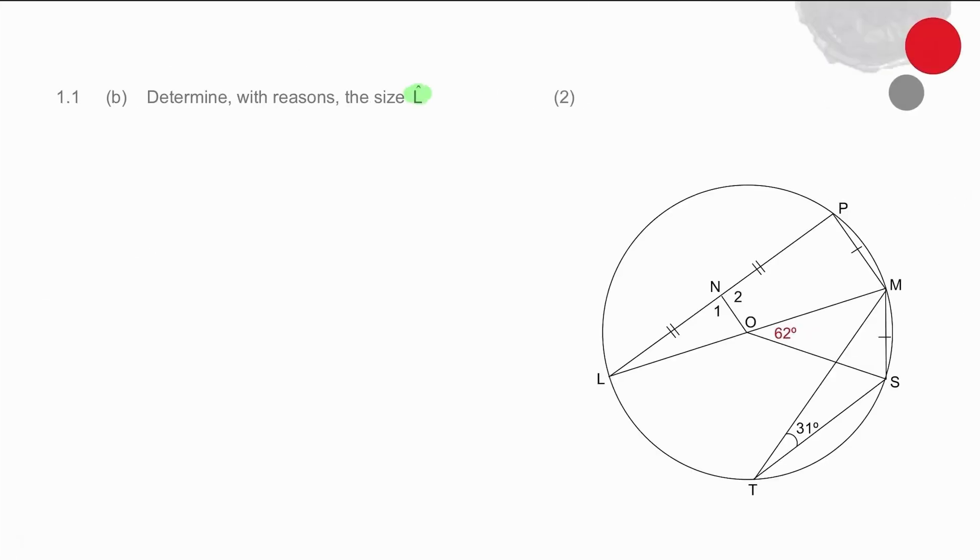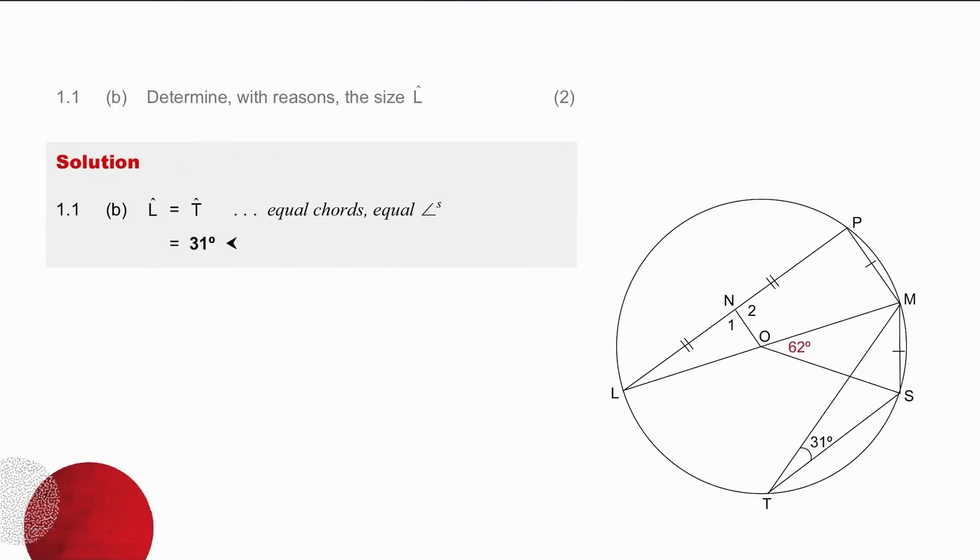In 1.1b, we are finding the size of angle L. And angle L is being formed by two lines, so we're going to trace them. When we do that, we realize that they are both going back to form a chord, which is PM. And chord PM is equal in length to chord MS. That means that the angle subtended by MS, which is at T, is equal to the angle subtended at L. So angle L is 31 degrees, because equal chords subtend equal angles. Written up neatly, we simply claim that angle L equals 31 degrees, equal chords, equal angles.